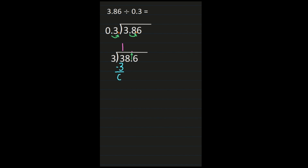I bring the 8 down and start dividing again: 8 divided by 3 is 2. 2 times 3 is 6, and 8 minus 6 is 2. I still have a number to bring down, so I bring the 6 down. Now I have 26 divided by 3, which is 8. 8 times 3 is 24, then I subtract: 26 minus 24 is 2.